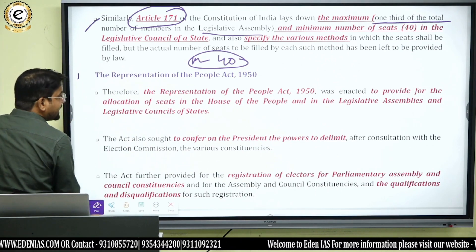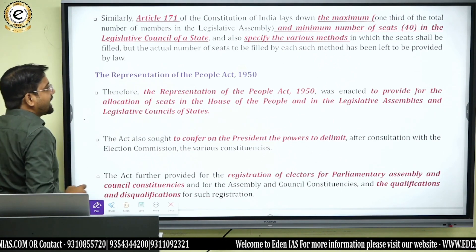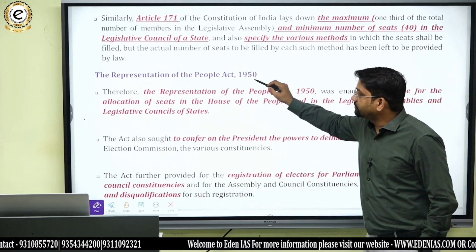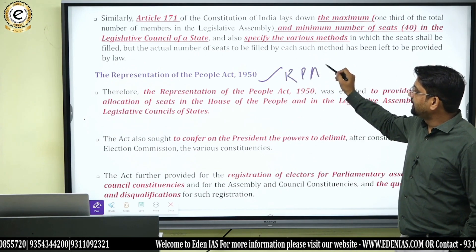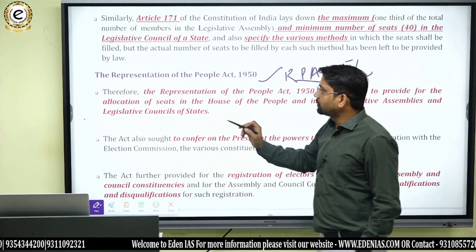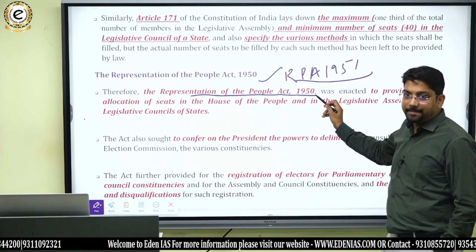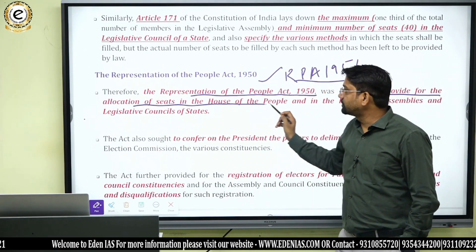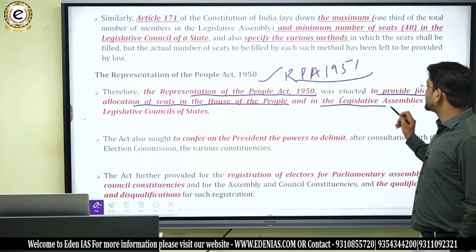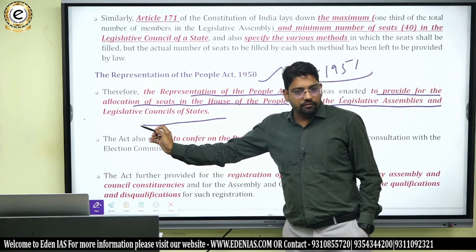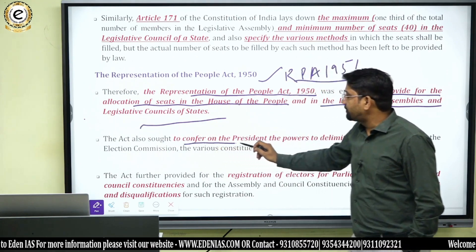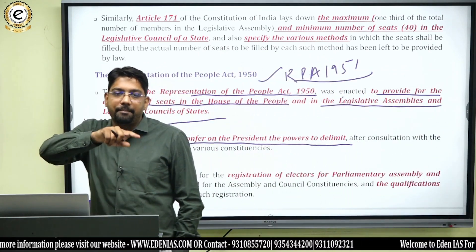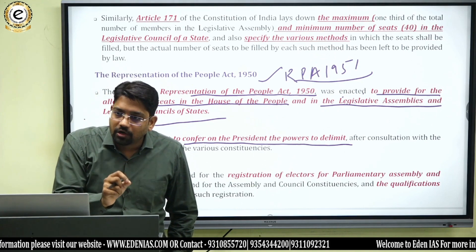To regulate elections, we have two acts. The Representation of the People Act 1950 and RPA 1951. The Representation of the People Act 1950 was enacted to provide for the allocation of seats in the House of the People, in the Legislative Assemblies, and the Legislative Councils of states. Another feature of the Act is to confer on the President the power to delimit — meaning to define the territorial area of a particular constituency.